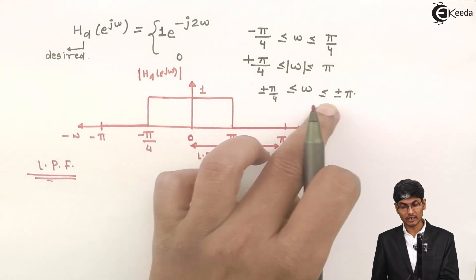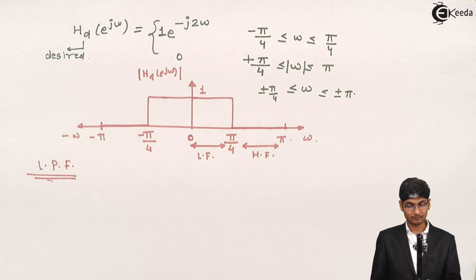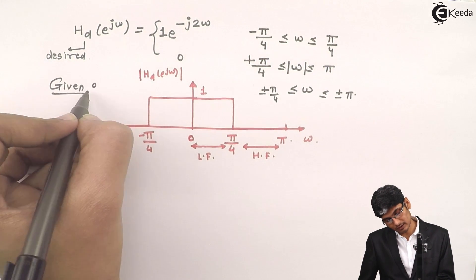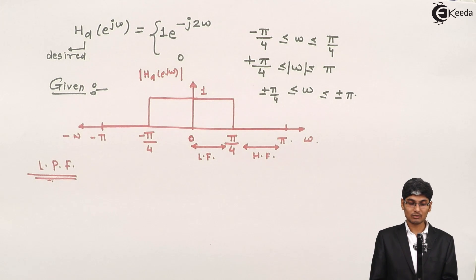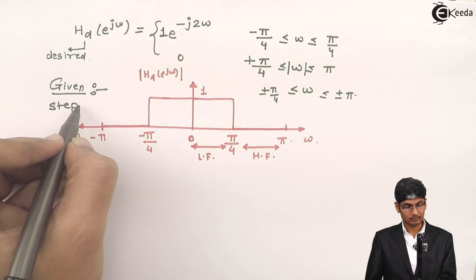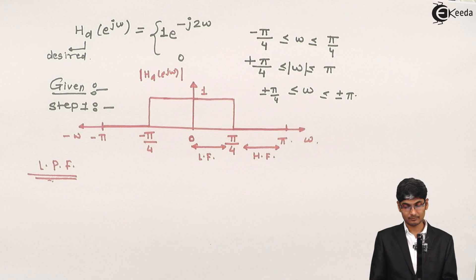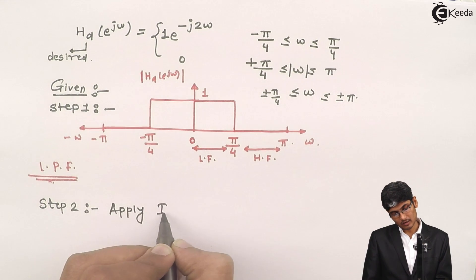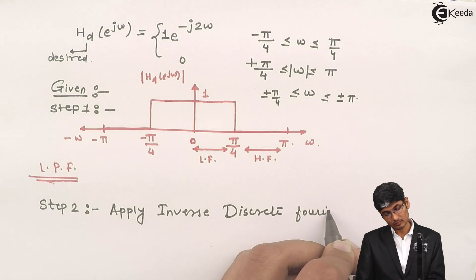How did we get it? From the given characteristics, I have seen what the system looks like and it looks like a low pass filter. So this was step 1 — H_D(e^{jω}) is given to me. Now I have to apply step 2, which is to apply the inverse discrete Fourier transform.